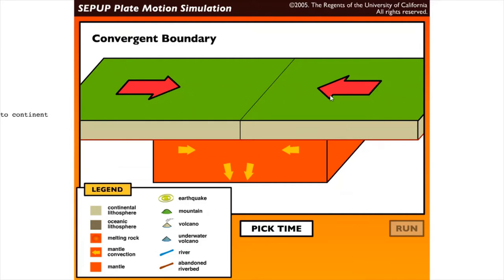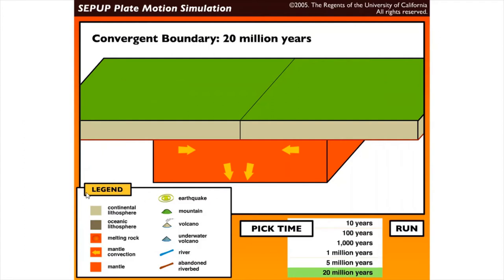This is how the convergent boundary looks like. Then let's pick a time, so this is a time lapse for 20 million years. On the right portion we have legends here: earthquake, mountain, volcano. So what do you think will be formed or will happen if there's a convergent boundary?